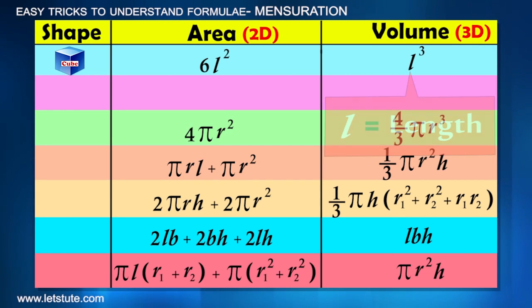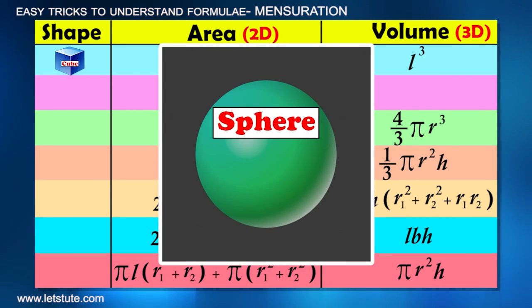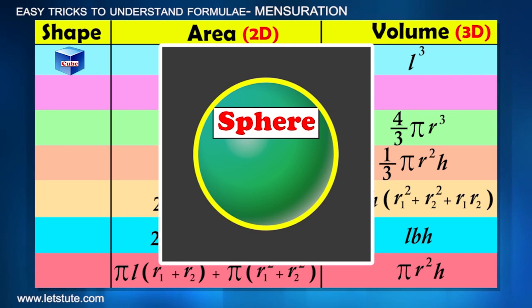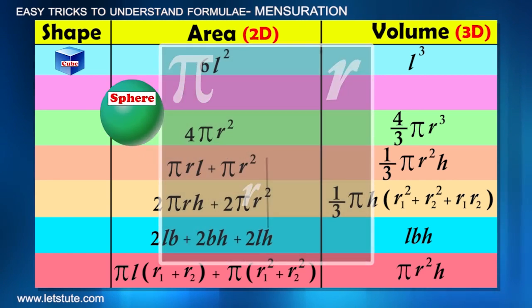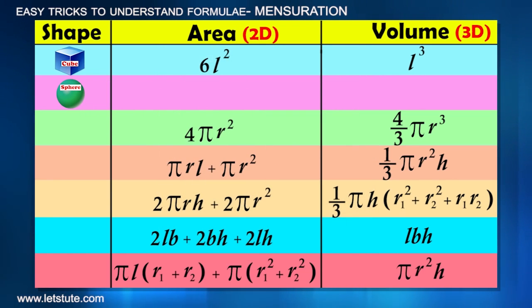Now let's randomly choose another shape: sphere. Well, sphere is round from all sides, so its formula will involve π, and it will have only one variable, that is radius. The best way to learn it is its surface area is 4 times the area of a circle, that is 4πr². About its volume: is there anything in the list that involves only radius and has power 3? Yes, that is 4/3πr³.